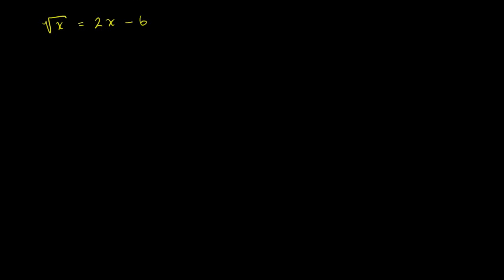So let us square both sides of the equation. We'll do this one slowly. Squaring seems like a valid operation — if that is equal to that, then that squared should also be equal to that squared. So when you take the square root of x and square it, that'll just be x.